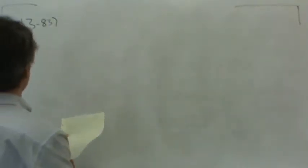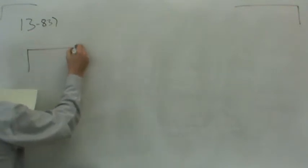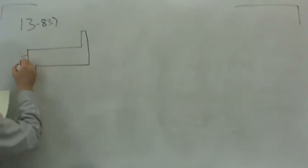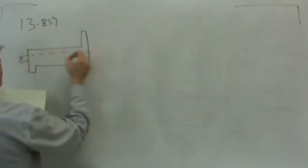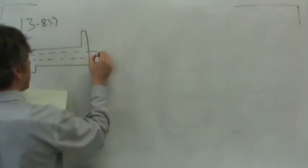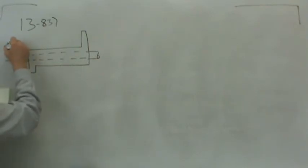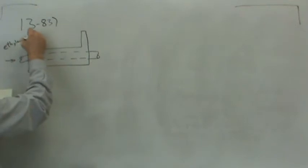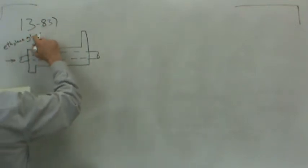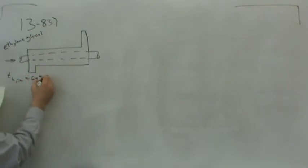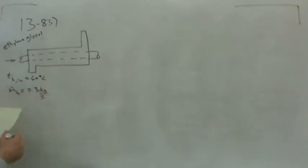Let me sketch the system. It's a double pipe heat exchanger — a pipe concentric with a shell essentially. Ethylene glycol flows in as the hot stream at 60 degrees Celsius at a rate of 0.3 kilograms per second, so there's our mass flow rate on the hot side.